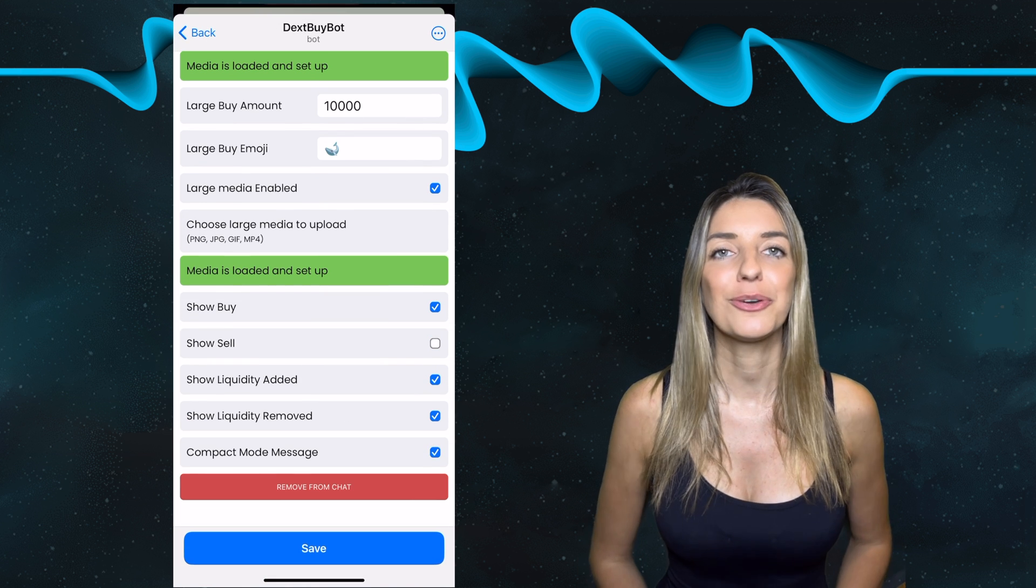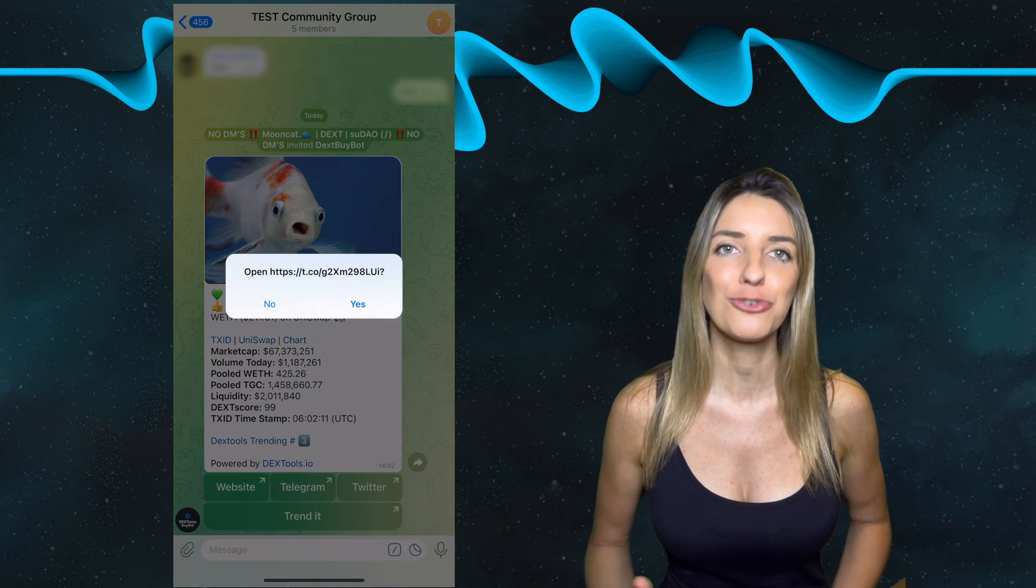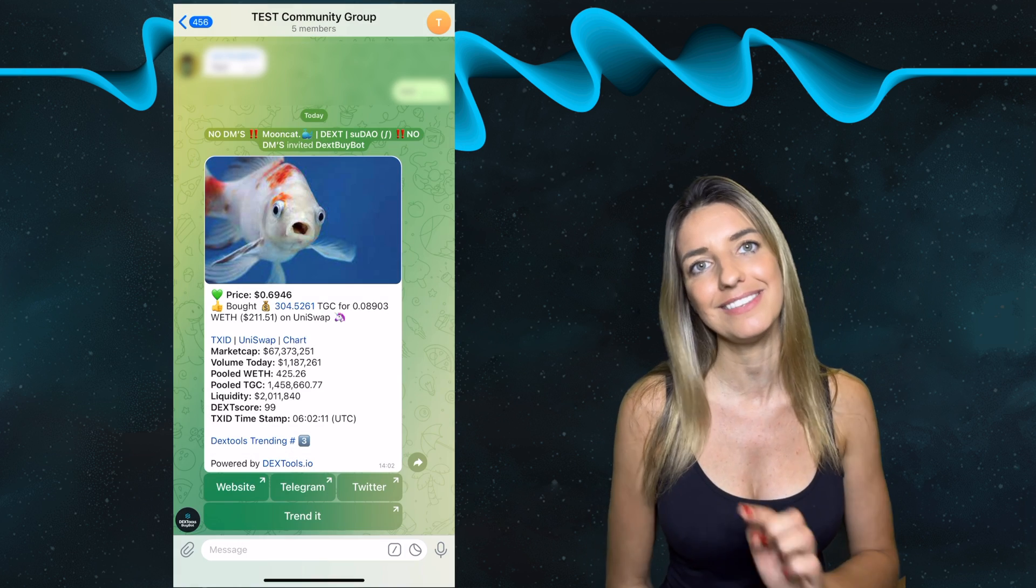Then just click on the save button and close the bot. And here we go, the members of your Telegram channel can now access your website, Twitter, and Telegram by simply pressing the buttons here.